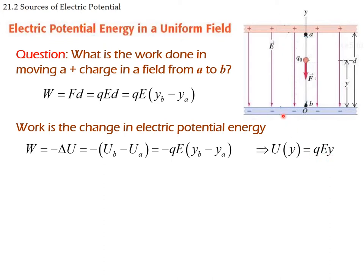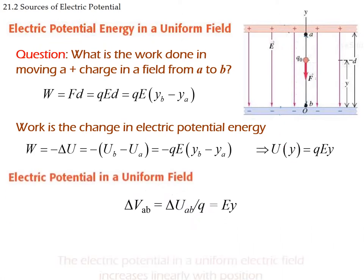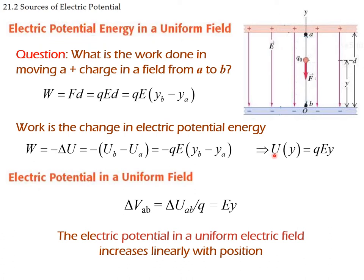This is valid only for cases of uniform fields. If we want to know the work done per unit charge, we divide the potential energy by the charge and get the difference in electric potential, which is simply the field times the height. The electric potential energy in a uniform electric field varies linearly with position y.